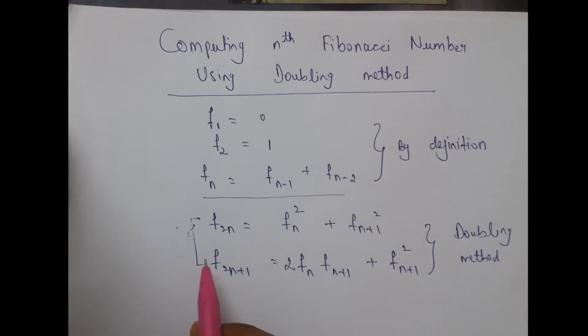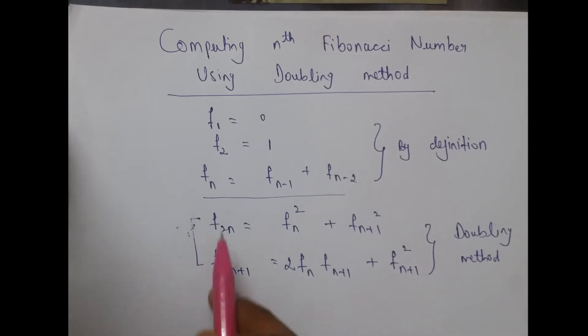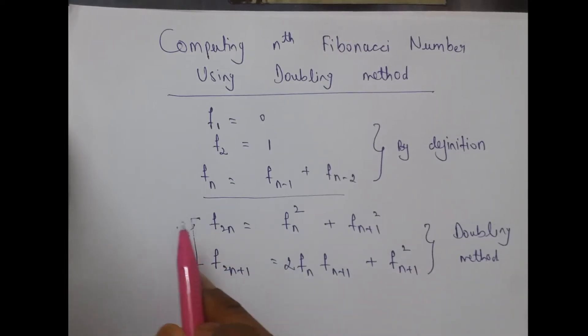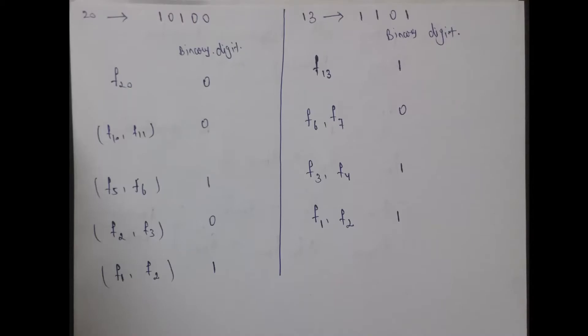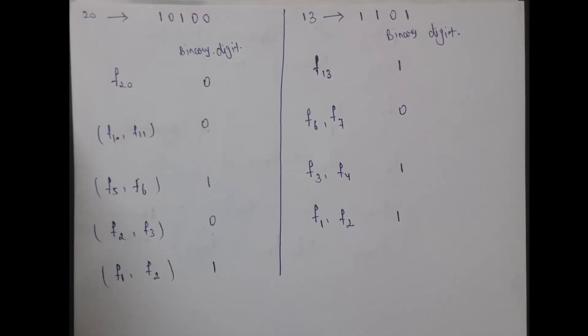So our problem here is how we can apply this relation to find the nth Fibonacci number. Let's try to find the 20th Fibonacci number and the 13th Fibonacci number by our doubling method.